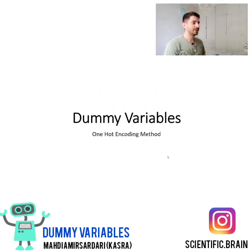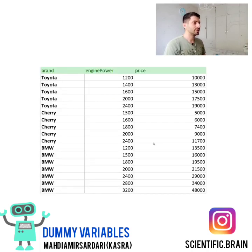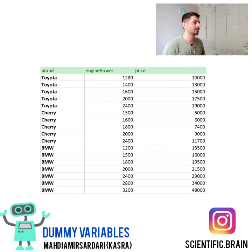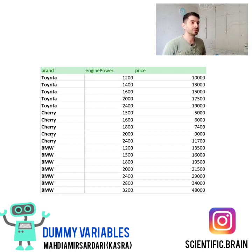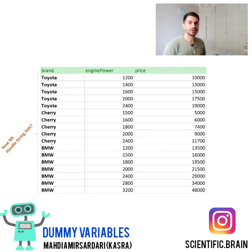Let's see in which cases we use dummy variables and the OneHotEncoding method. If you remember our previous example, which was devoted to a linear regression problem, our dataset contains only two columns — the engine power as a feature and the price as a target value. But for this dataset, we added the brand column which contains string values for categories of cars like Toyota, Cherry, and BMW. Machine learning, in fact, only works with numeric columns and numeric values, but here we have string values. So how can we solve this problem?